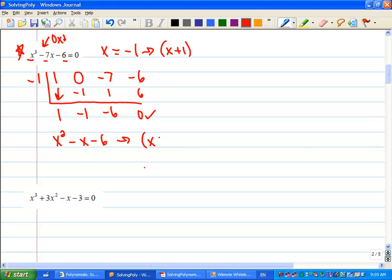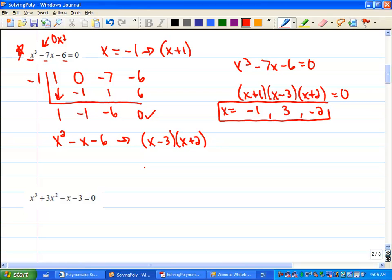So this is going to become x minus 3, x plus 2. So if x cubed minus 7x minus 6 equals 0, so does x plus 1 times x minus 3 times x plus 2. And that gives me values of negative 1, 3, and negative 2 for the solutions.